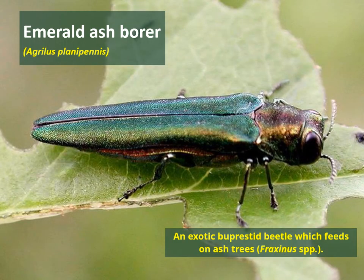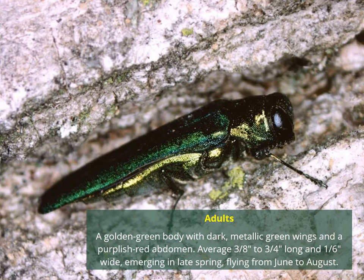Emerald ash borer is a cute little green buprestid beetle. As the name suggests, we're concerned about this species because it feeds on ash trees. The adults have that very characteristic emerald green body. The wings are kind of a metallic green, but if you flip them over, their abdomen is more of a purplish red. These are less than an inch long.